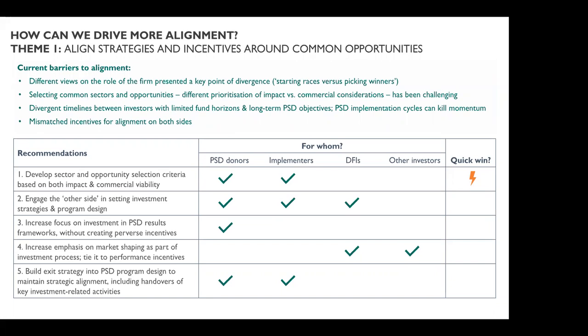Around Theme 1 — aligning strategies and incentives — the current barriers include different views on the role of the firm between donors and investors. Donors are interested in starting races, enabling the growth of an entire sector or new value chain. There are limitations to how much donors can pick winners or use donor capital to support individual firms. But for investors, that's the whole point — the success of individual firms is how investors are set up to operate because that's where investment returns come from.